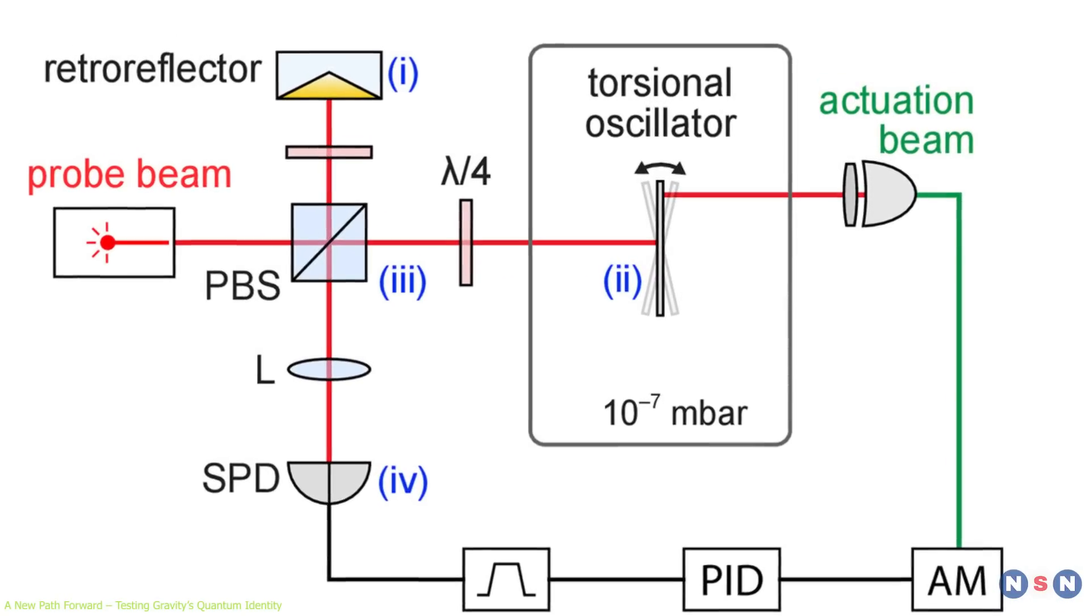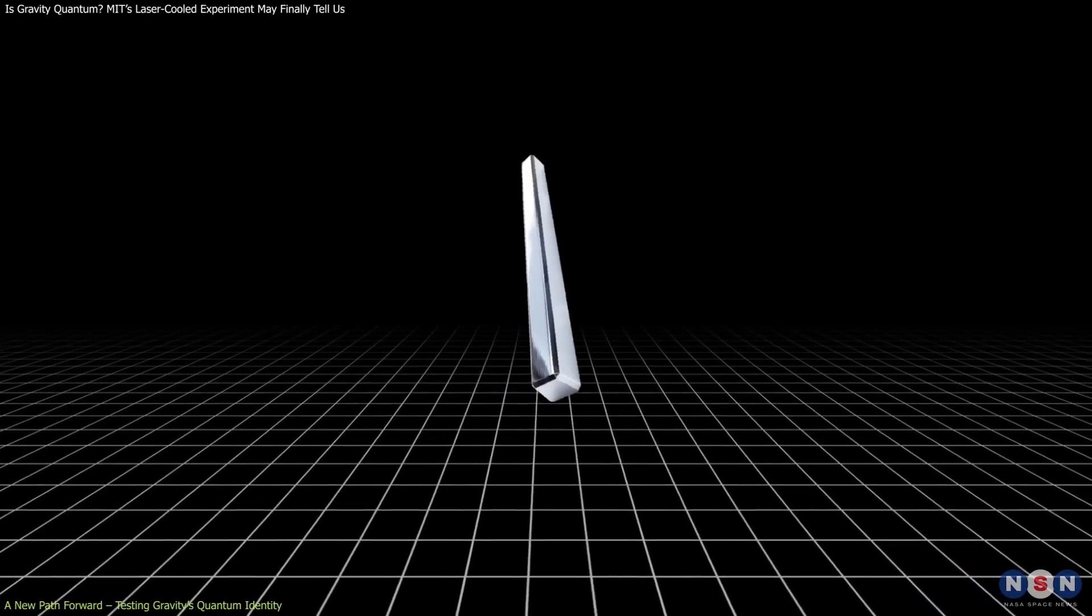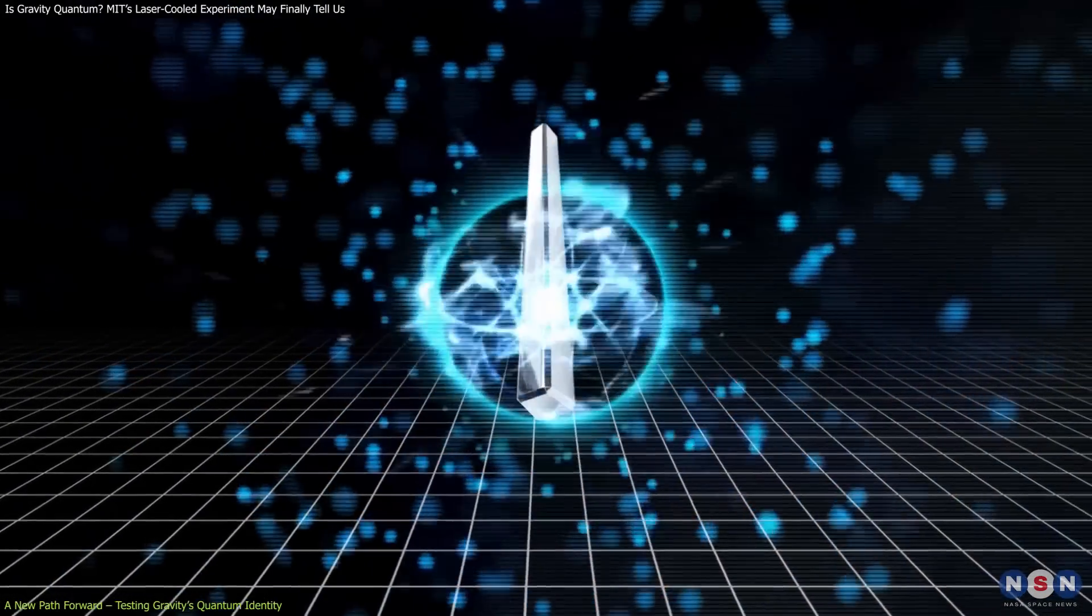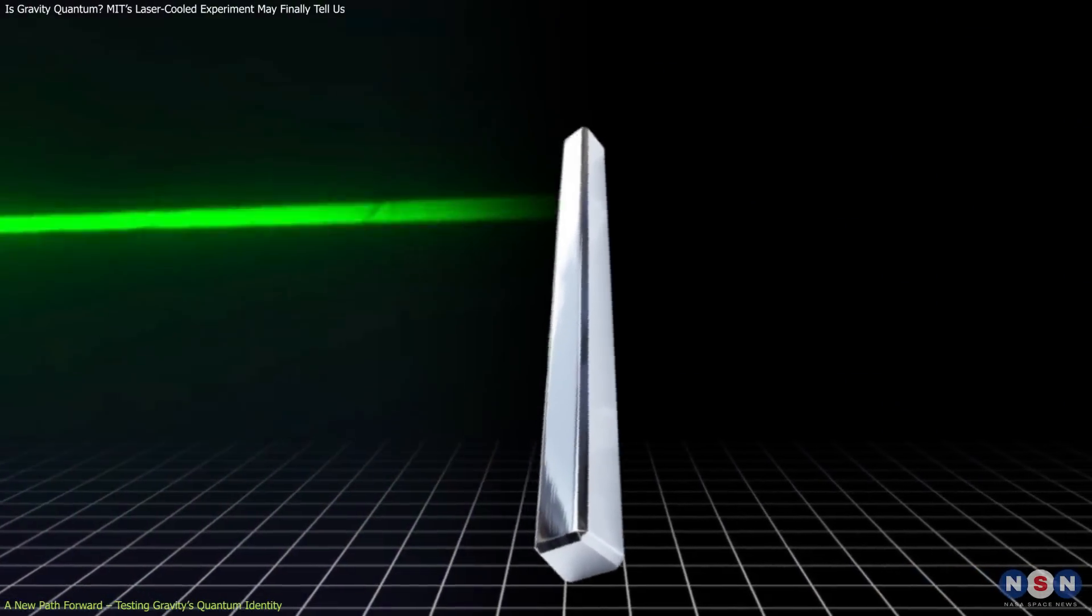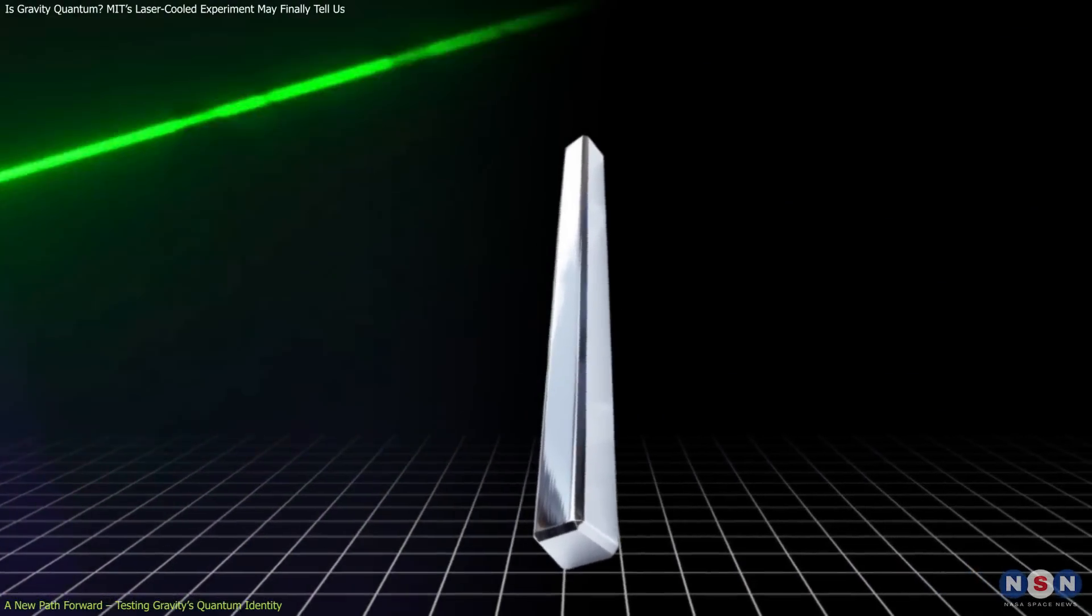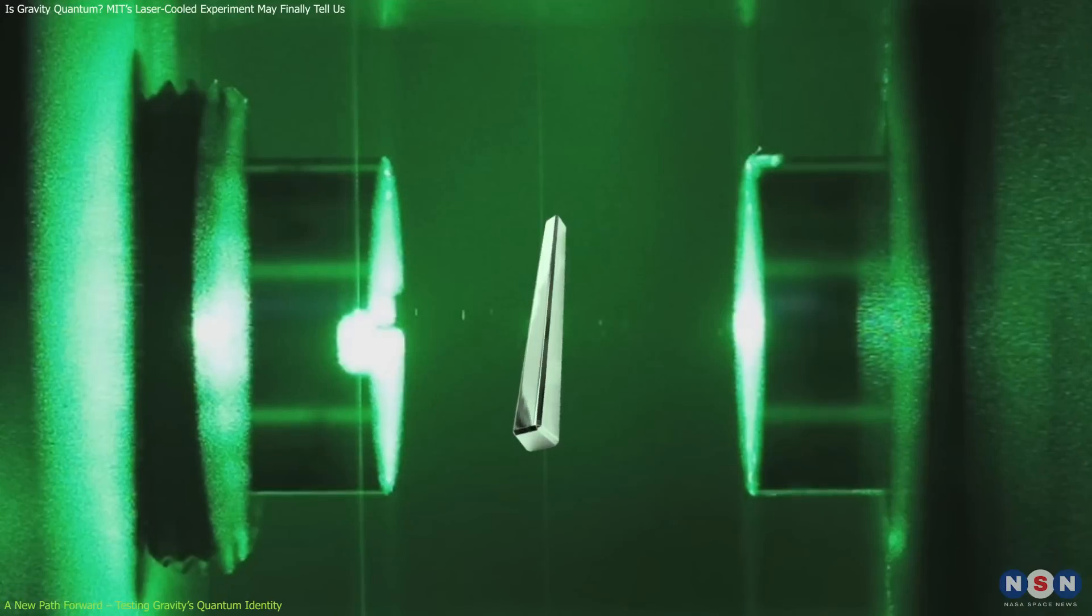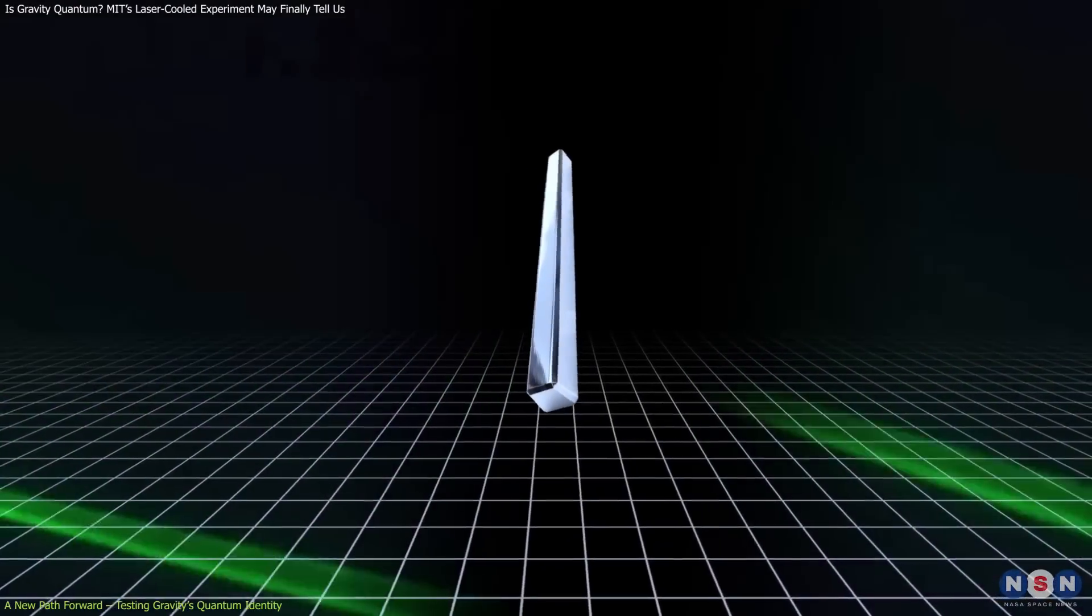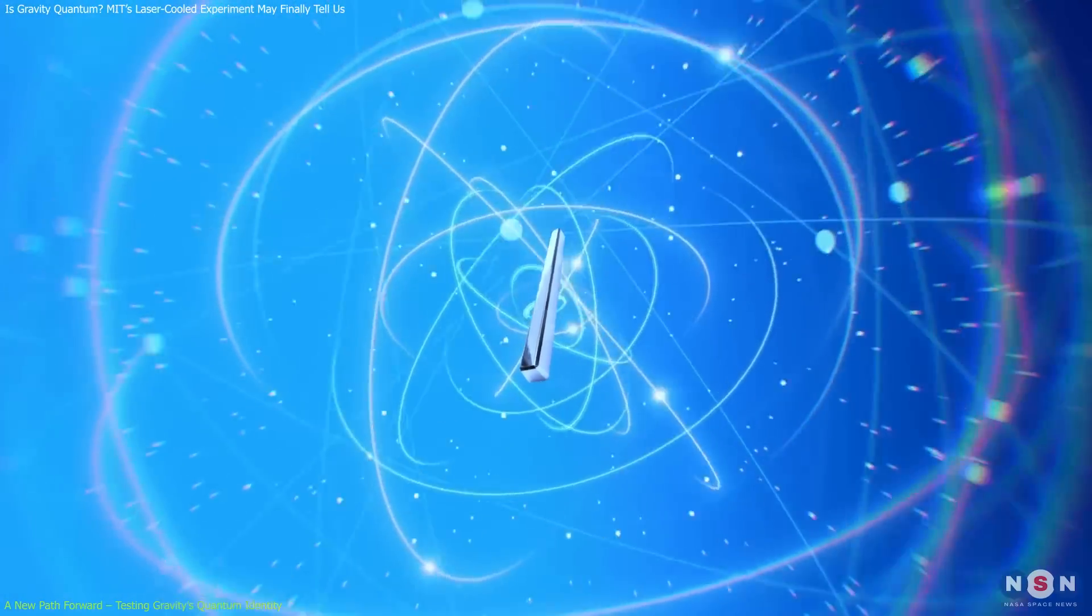The next chapter in this story involves pushing the system even closer to its quantum ground state. Reaching this point means that the oscillator is in its lowest possible energy state, where its motion is governed purely by quantum fluctuations rather than thermal noise. To achieve this, the team plans to strengthen the interaction between light and the mechanical oscillator. One strategy involves placing the oscillator inside an optical cavity, a setup where light bounces between mirrors and amplifies the angular shifts caused by the oscillator. This would allow for even more precise control and cooling, possibly bringing the system fully into the quantum regime.